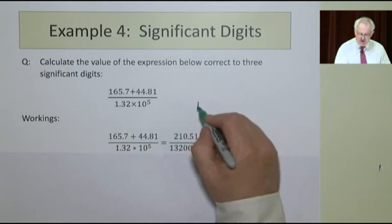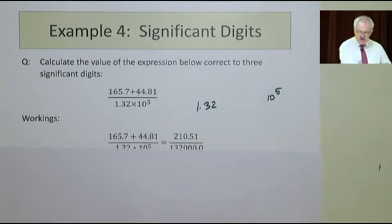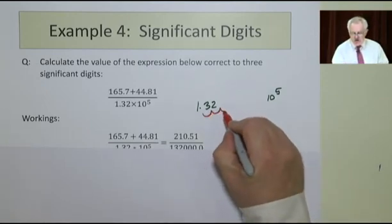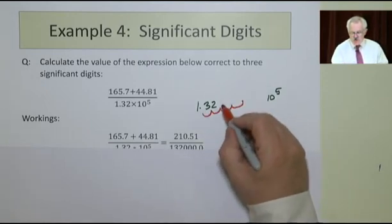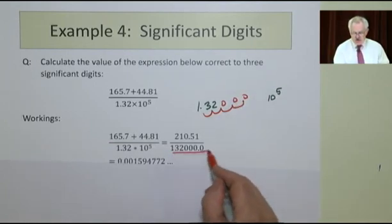132 × 10^5 means that we take this number and move it five places to the right: one, two, three, four, five. So 132,000 there.